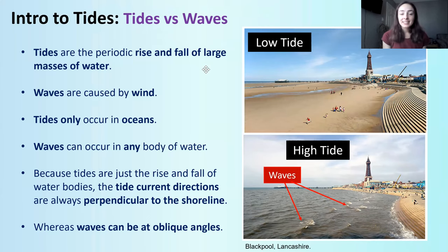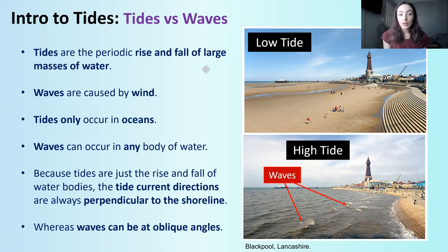First things first, I want to distinguish tides and waves. Tides are the periodic rise and fall of large masses of water, and tides are due to the moon's gravitational pull on Earth, which I'll talk about in the next couple slides. Waves, on the other hand, are caused by wind, and so waves can occur on any body of water, but tides only occur in the oceans because the ocean is a big enough body of water to be affected by the moon's gravity. Important for geology is to note that tide current directions are always perpendicular to the shoreline.